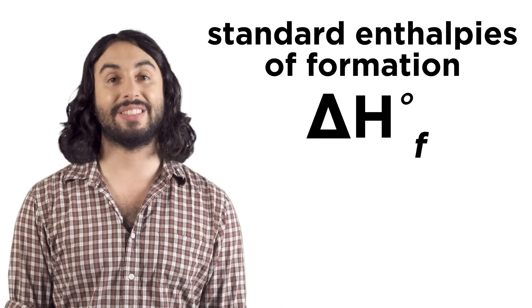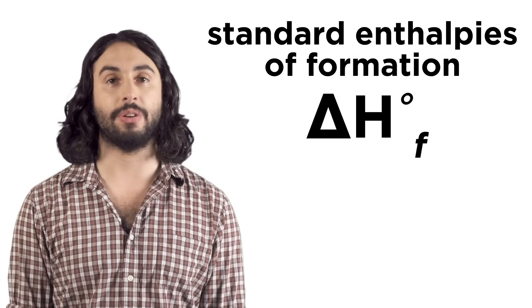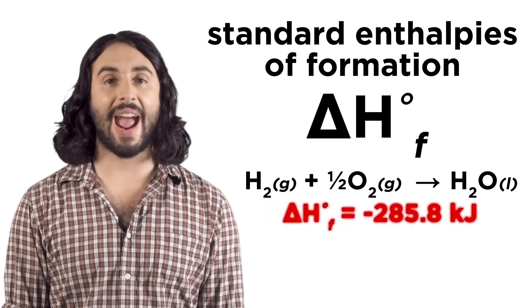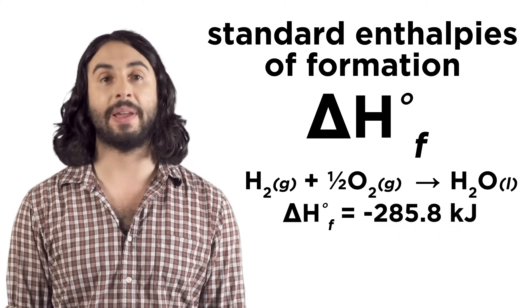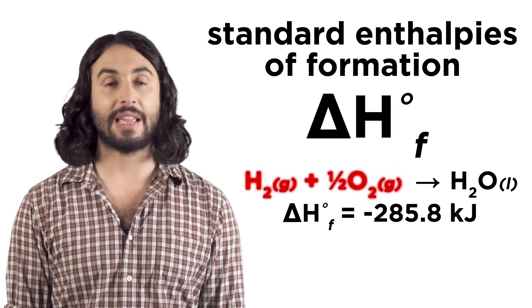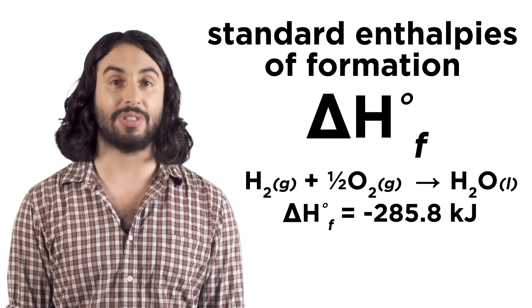Another way to calculate an unknown delta H is to use standard enthalpies of formation. This is denoted by the following symbol, and it represents the enthalpy associated with forming one mole of a substance from its respective elements in their standard and most stable state.